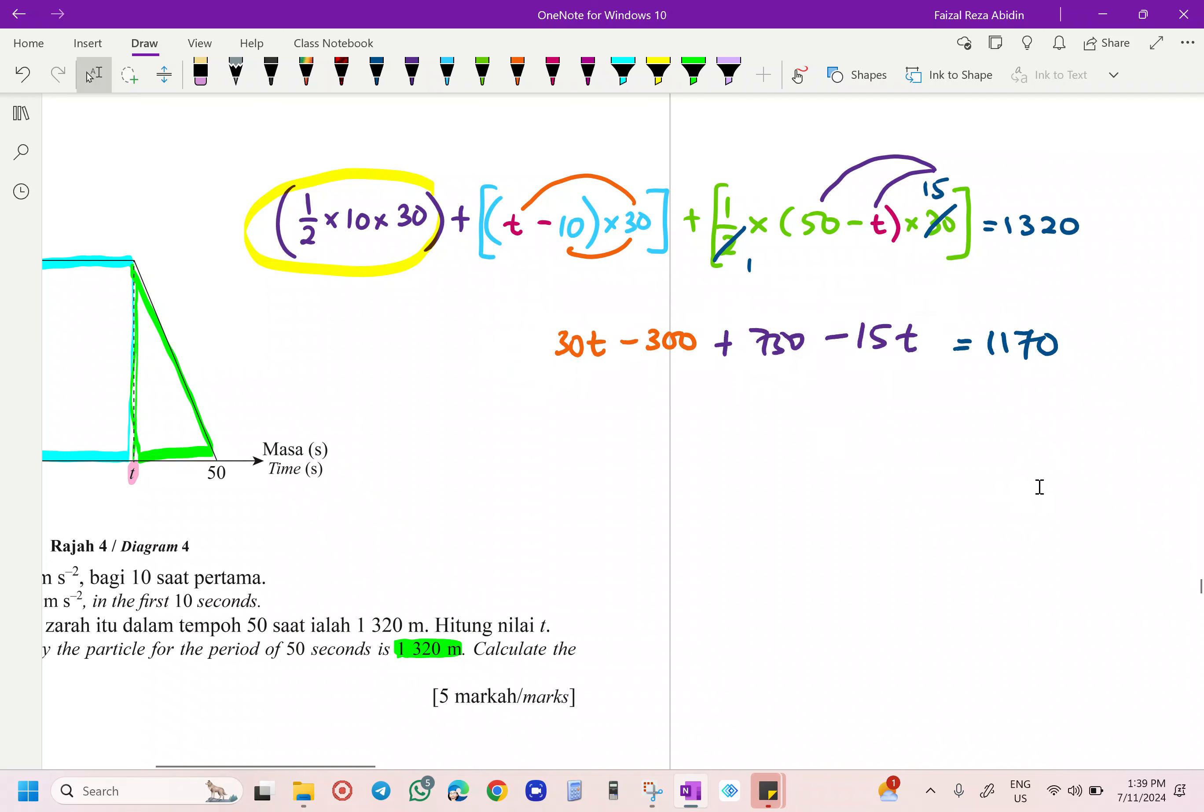Next, what happened? I am going to bring straight away everything here. Find first. 750 minus 300, I am going to get 450. Bring to the other side. So 1,170 minus 450, you are going to get 720. Then this one, I just take 30T minus 15T, we are going to get 15T.